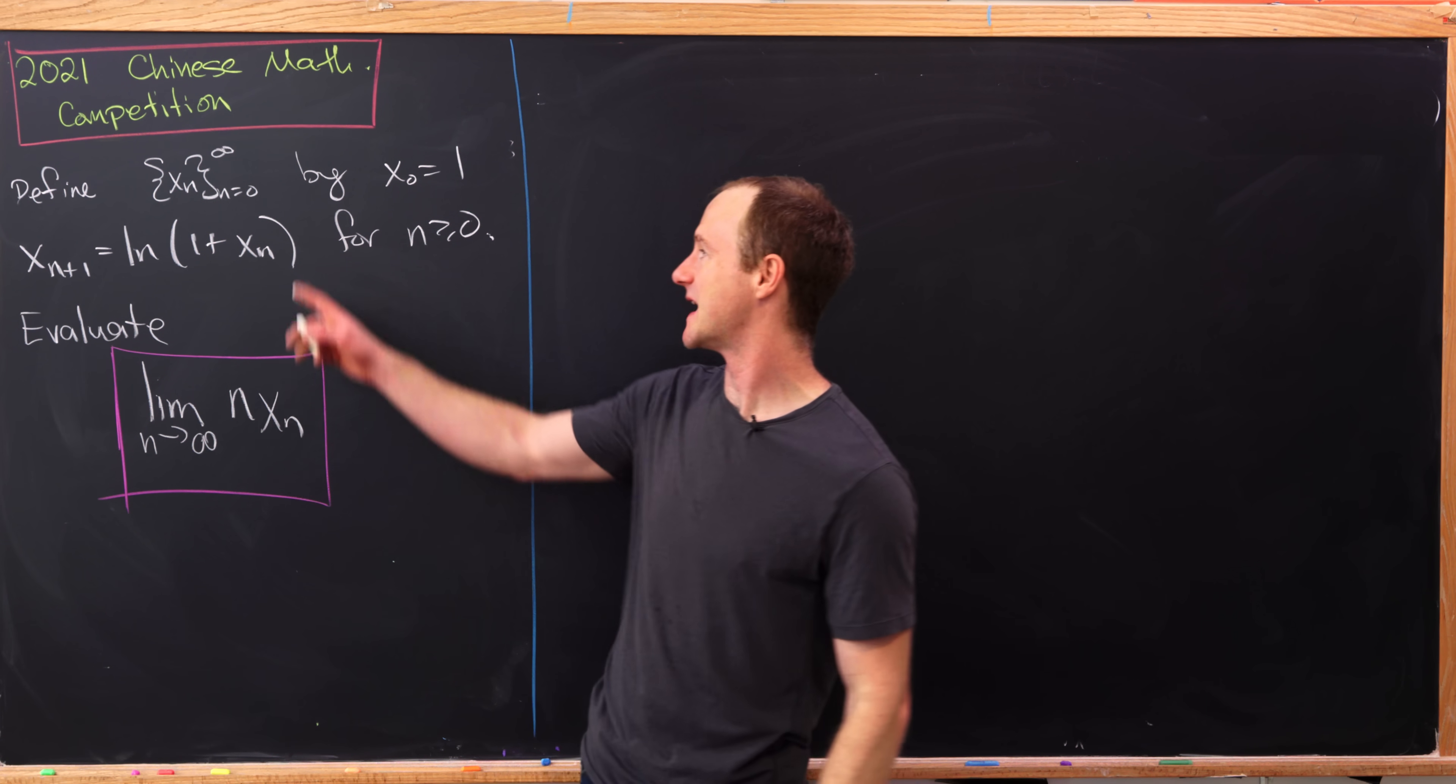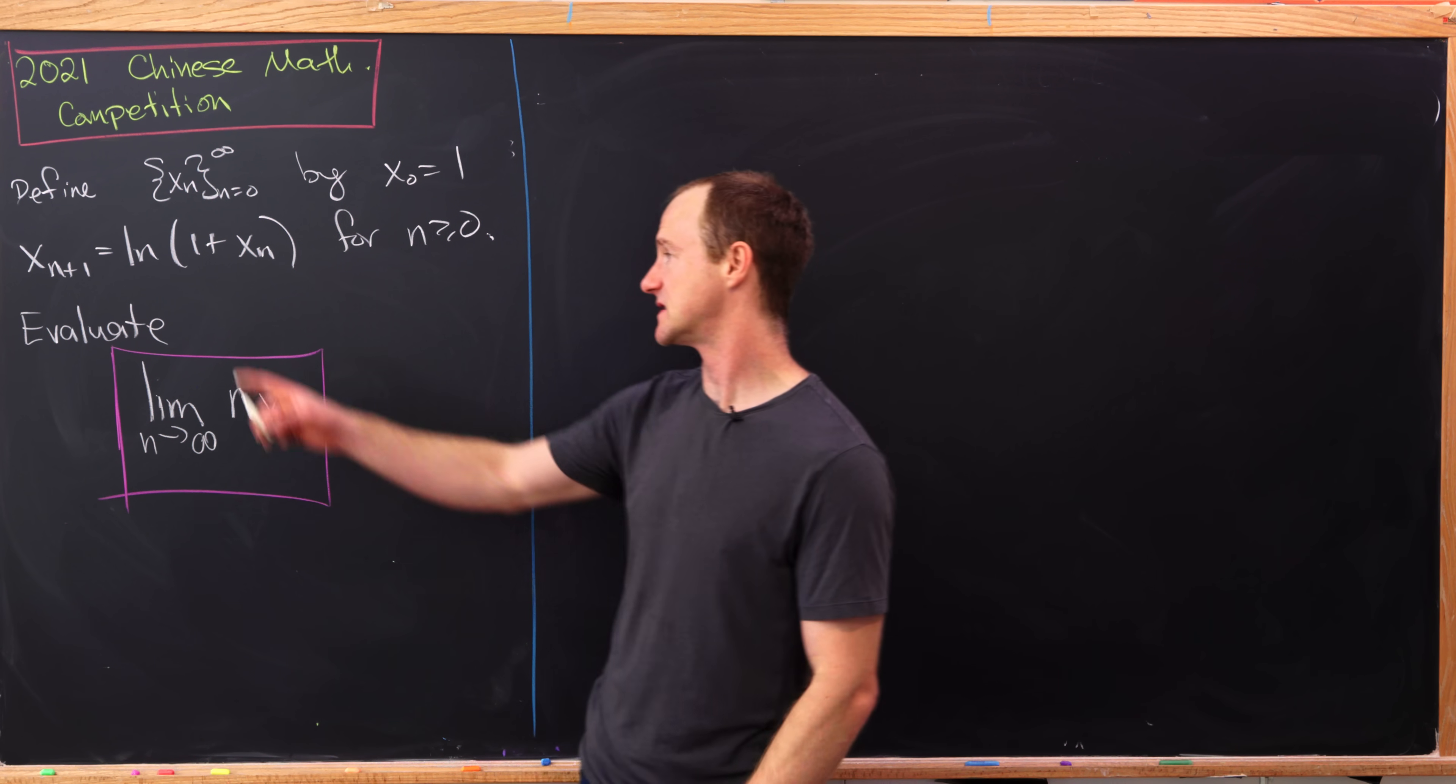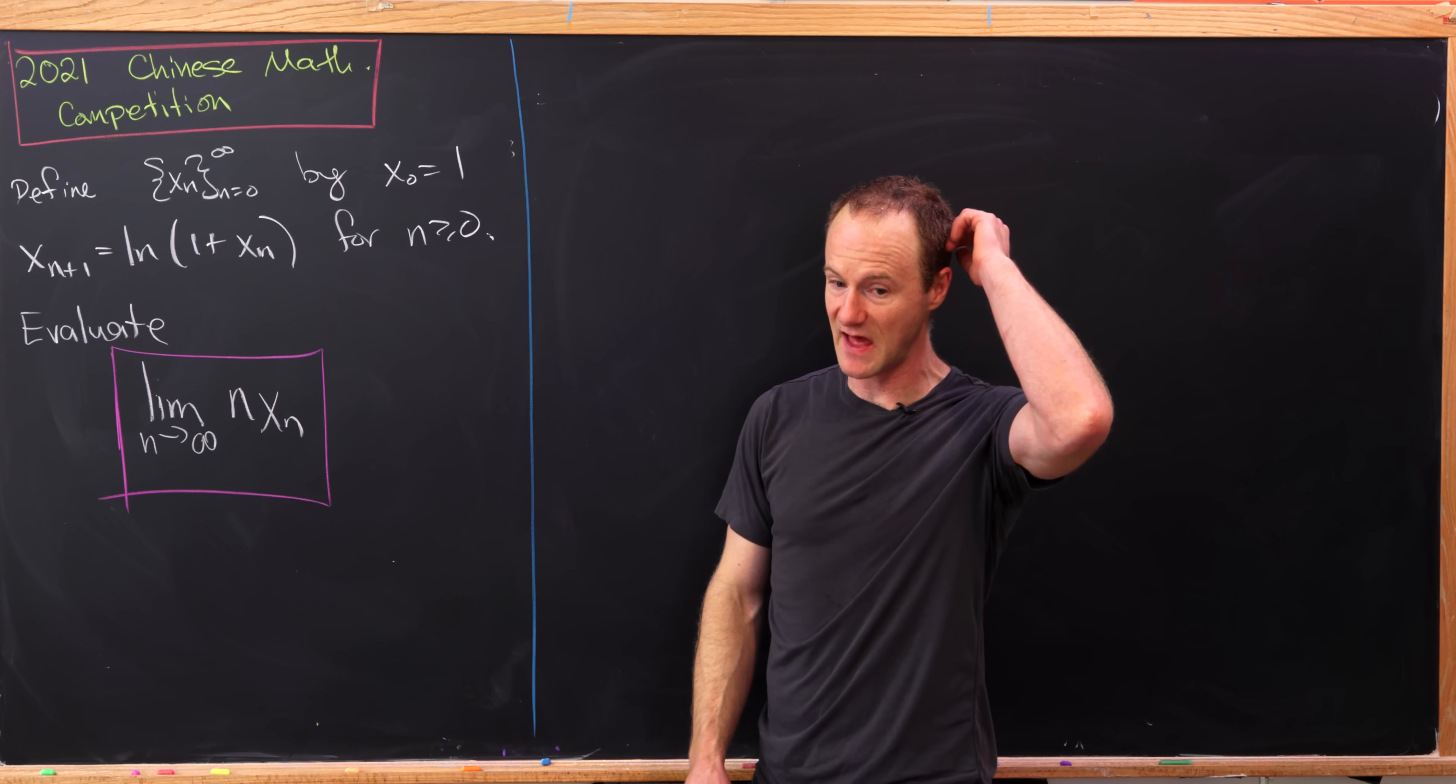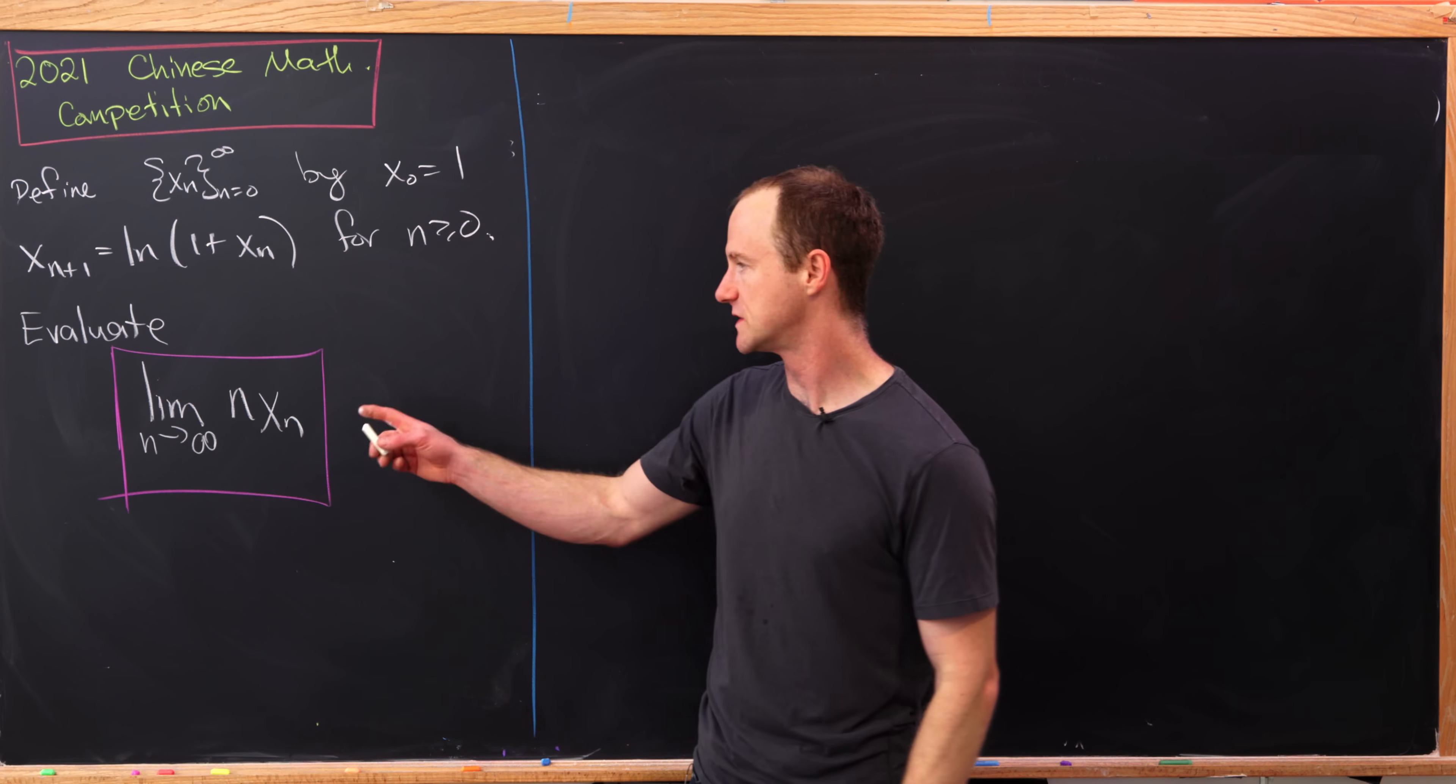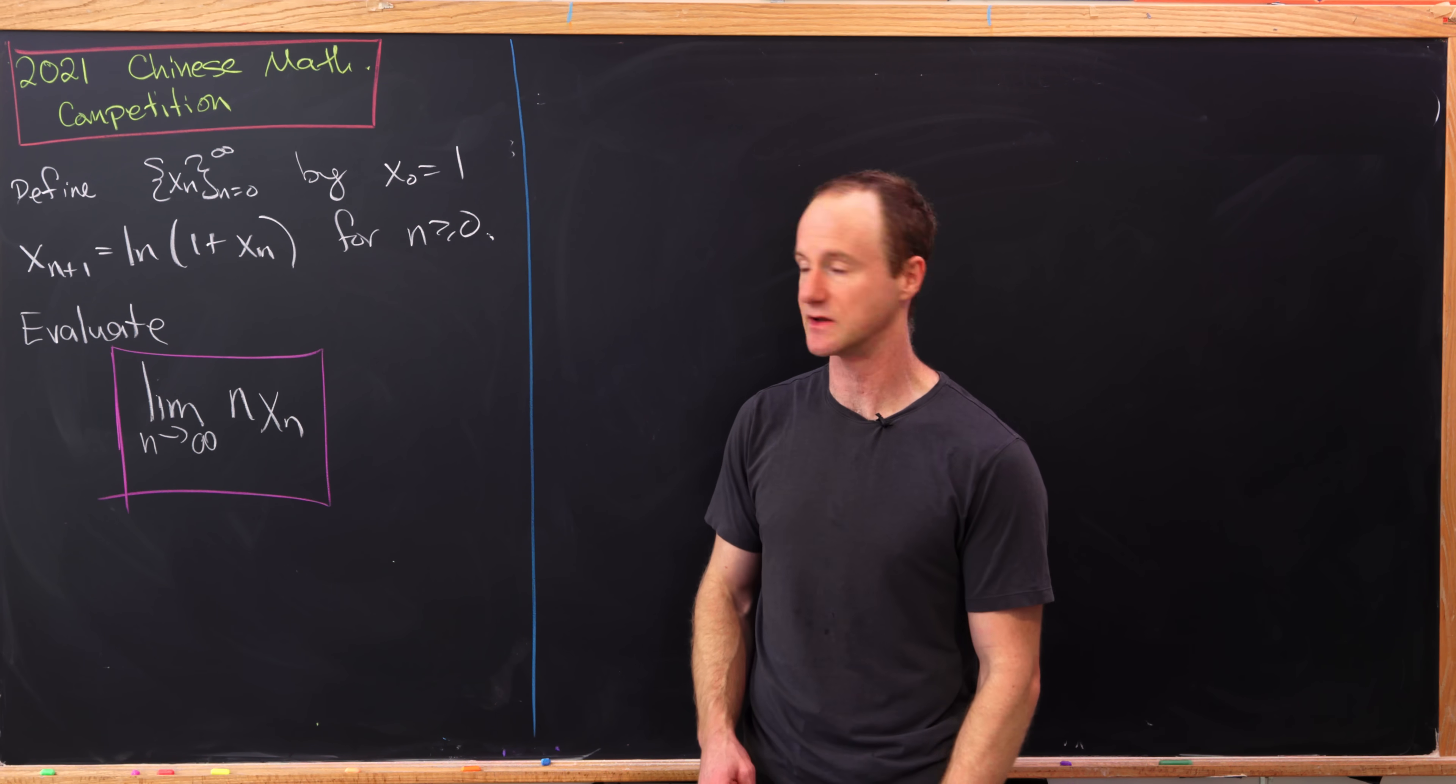We'll define a sequence x sub n by x0 equals 1, and then x_{n+1} is the natural log of 1 plus x_n, and that holds for values of n greater than or equal to 0. Then our goal is to evaluate the limit as n goes to infinity of n times x sub n.